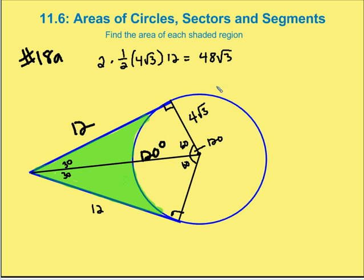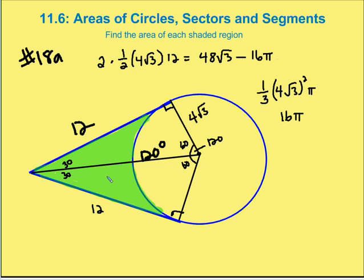Now I want to subtract the area of the sector. This sector has a central angle of 120 degrees — that's one-third of 360. With a radius of 4√3, the sector area is one-third of π times (4√3)². Four√3 squared is 48 (since 4² = 16, times 3 = 48), so one-third of 48π gives me 16π. Therefore, the area of the shaded region is 48√3 minus 16π.